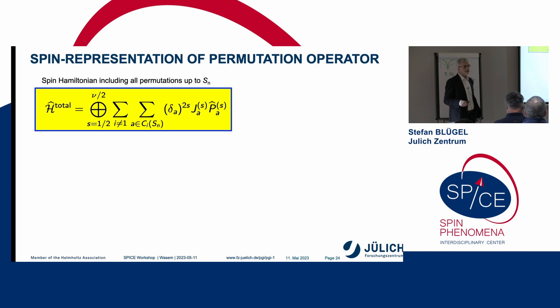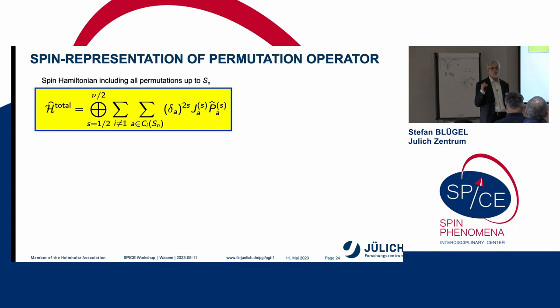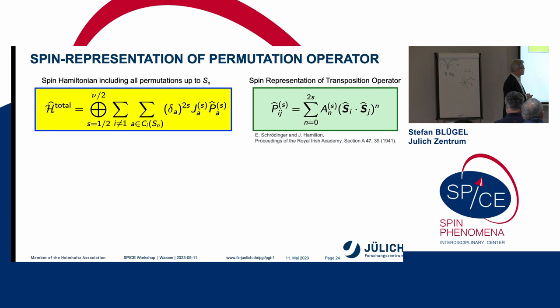So now we are basically finished. But we have to do one more thing. We have to represent our permutation operators in the language of spins. Otherwise, we cannot apply it. And then it turns out that a transposition can be expanded into products of Heisenberg terms, Heisenberg-type terms, bilinear terms, powers of bilinear terms, depending on the size of the spin s. And that means here, for spin-1/2, this you probably have seen in any textbook already. It is a Heisenberg term.